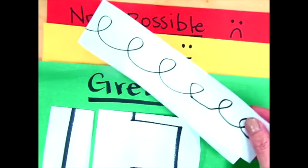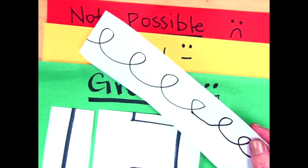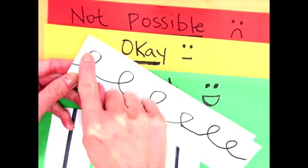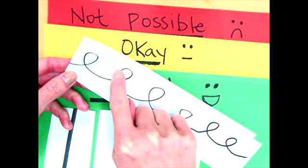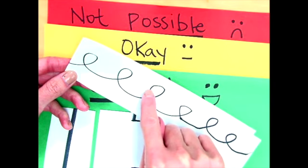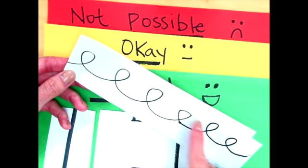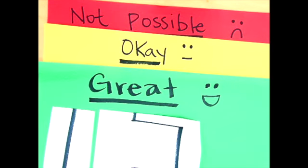All right, next I have my curly line. If I tried to cut on this line, think about what would happen. Would I end up with two pieces? No, you'd have your two big pieces, but then you'd have all these little pieces that fell out. So we don't want to do this one for this project. This is not possible for our puzzle project.